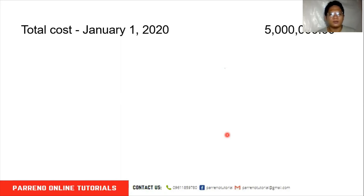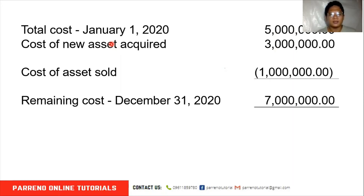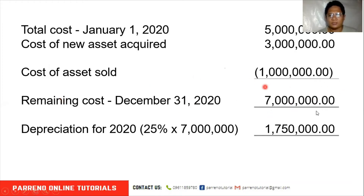Based on our data, the beginning cost is $5,000,000. We acquired $3,000,000 and disposed of an asset costing $1,000,000. The remaining cost on December 31, 2020 is $7,000,000. This is the base for computing depreciation. Just like the double declining balance method, depreciation here is based on cost. We disregard the $3,000,000 accumulated depreciation, so: $7,000,000 times 25% composite rate equals depreciation for the year of $1,750,000.